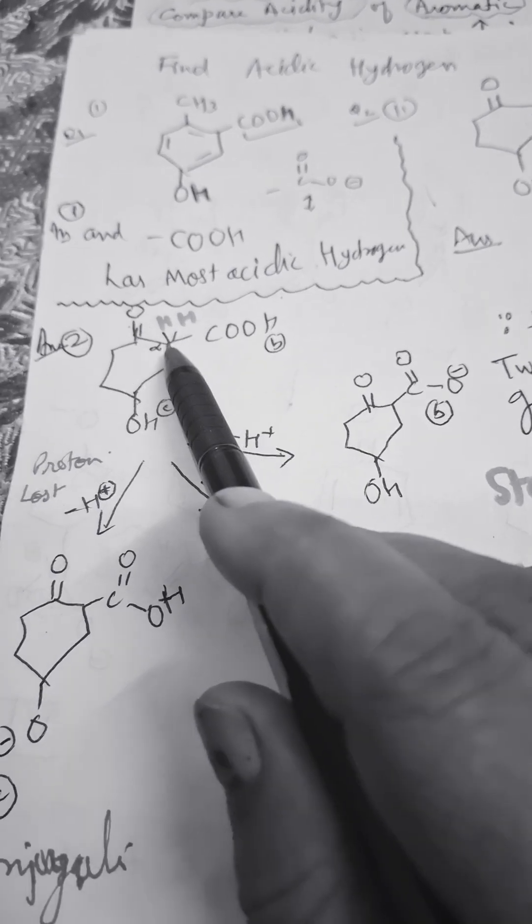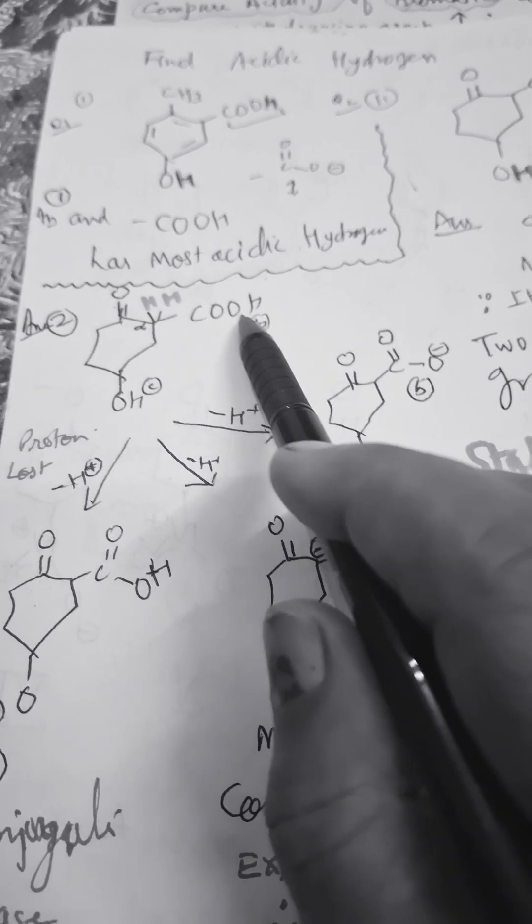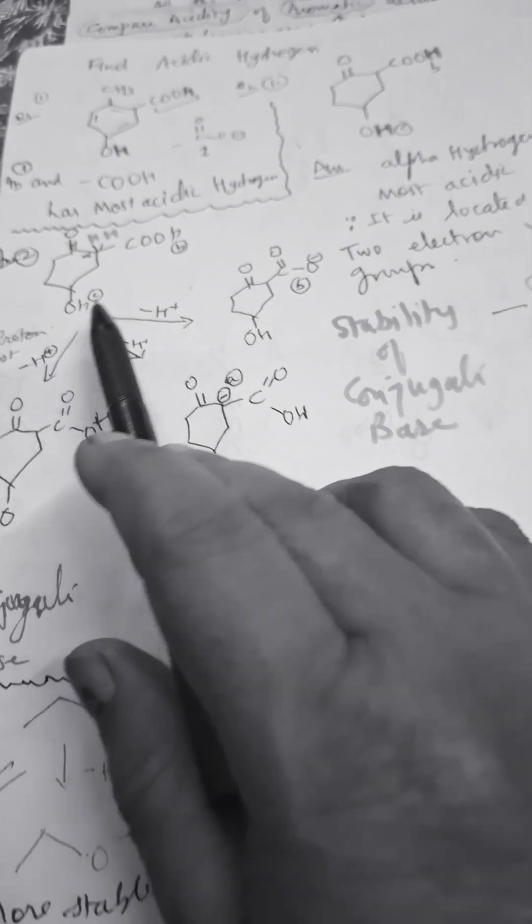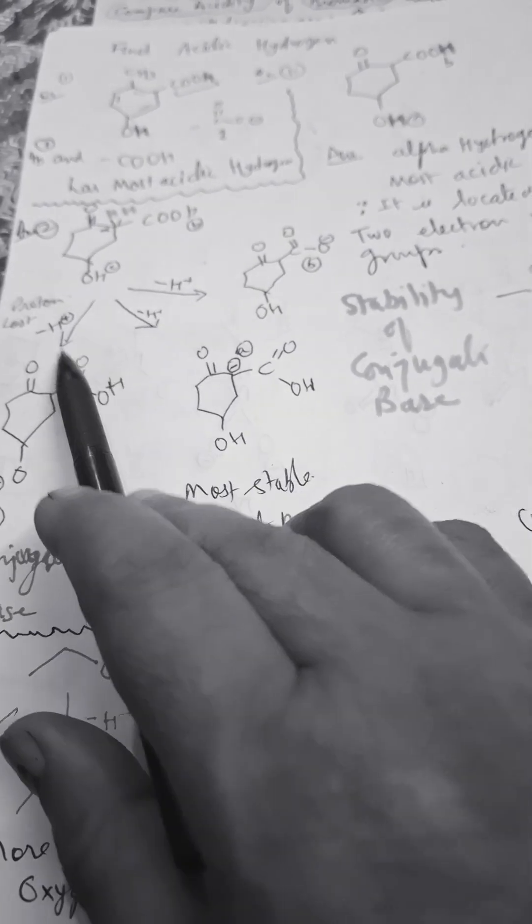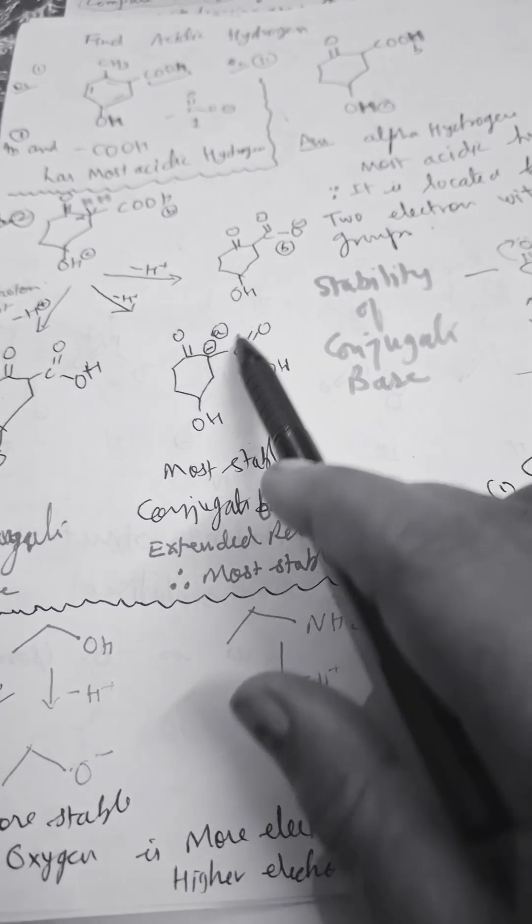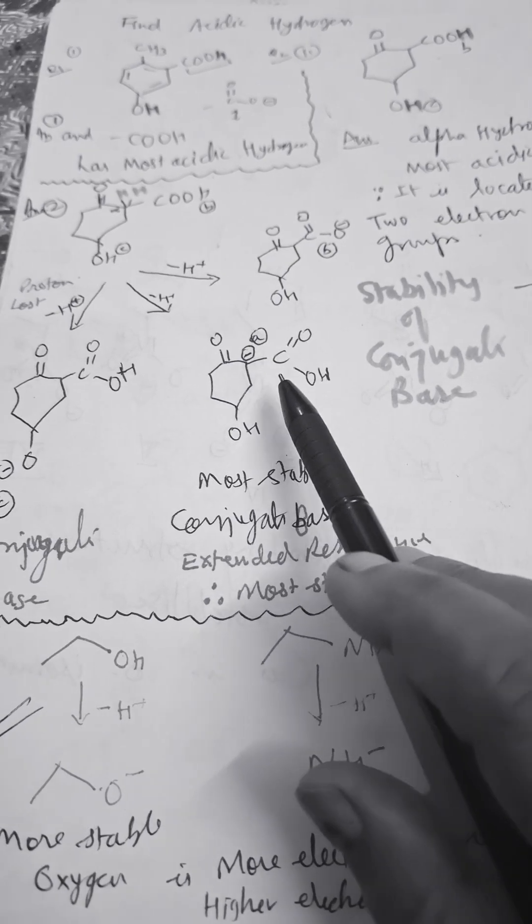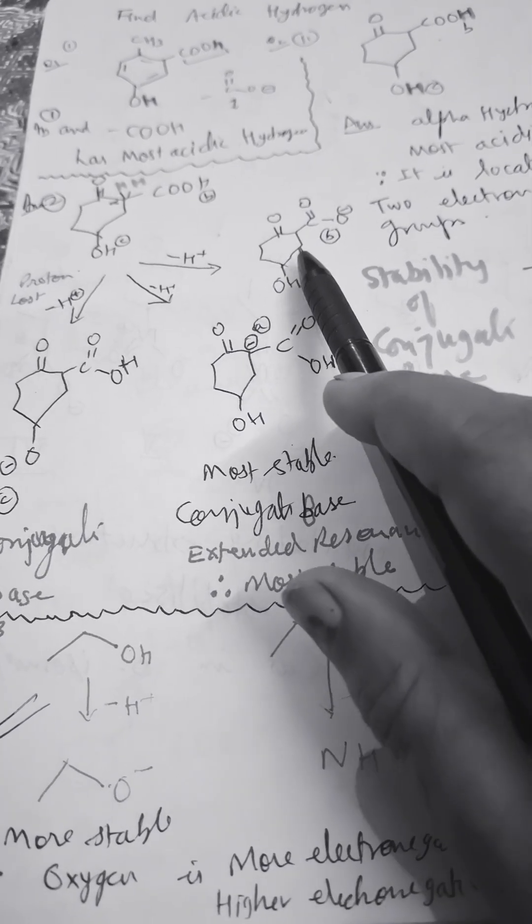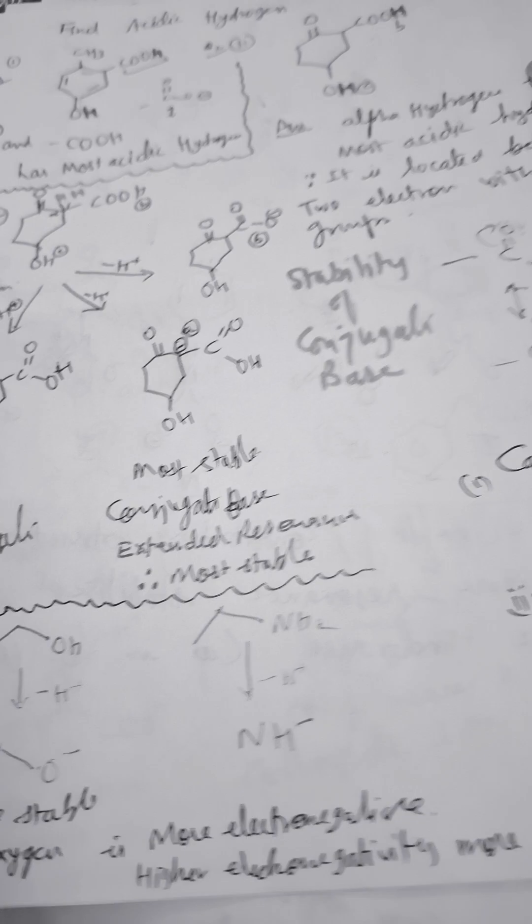This alpha hydrogen is more acidic compared to the COOH group or the OH group because after the loss of proton, the conjugate base is more resonance stabilized compared to carboxylate. Why? Because...